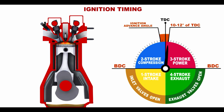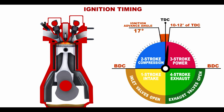The optimal ignition-advanced angle is determined by crankshaft speed. The higher the crankshaft speed, the earlier the spark plug must fire. If the crankshaft speed is low, the ignition advance angle should be closer to top dead center.